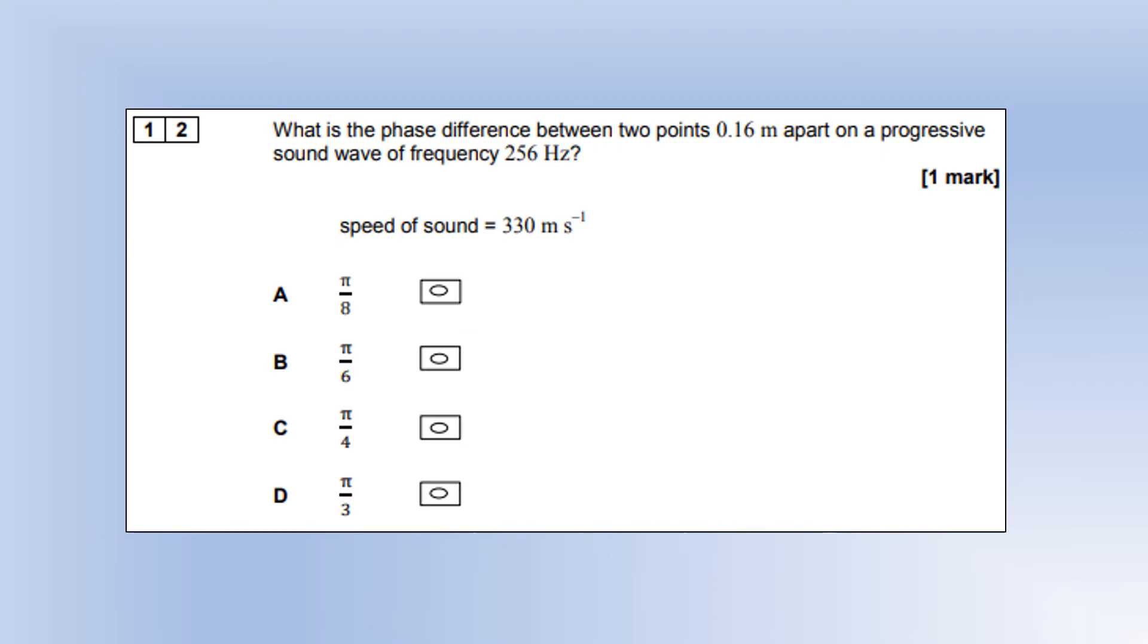What is the phase difference between two points 0.16 meters apart on a progressive sound wave of frequency 256 hertz? The speed of sound is 330. First, we figure out the wavelength of the sound wave using the speed and frequency. Then phase difference is the ratio of the distance between the points as a fraction of the wavelength times 2π, which comes out to about π over 4, which is option C.